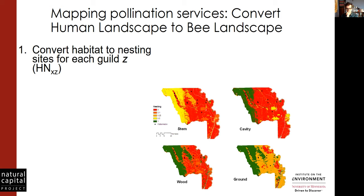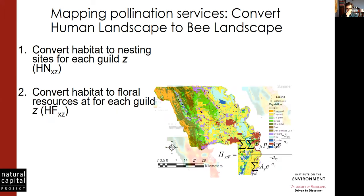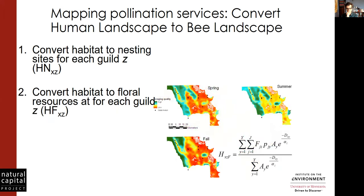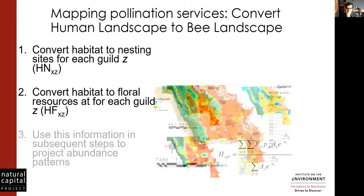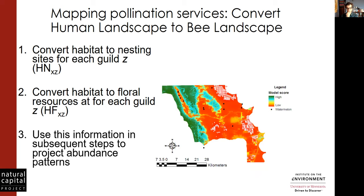We convert that same landscape into floral resources — it looks a little fuzzy because we're modeling how bees are moving. This is a distance-weighted convolution that weights floral resources in different seasons: spring, summer, and fall. You could just have one season if that's all you know about. The model adds up the quality of those floral resources in the landscape, then we put those two layers together to create an integrated assessment of the overall quality of abundance coming from those nest sites.